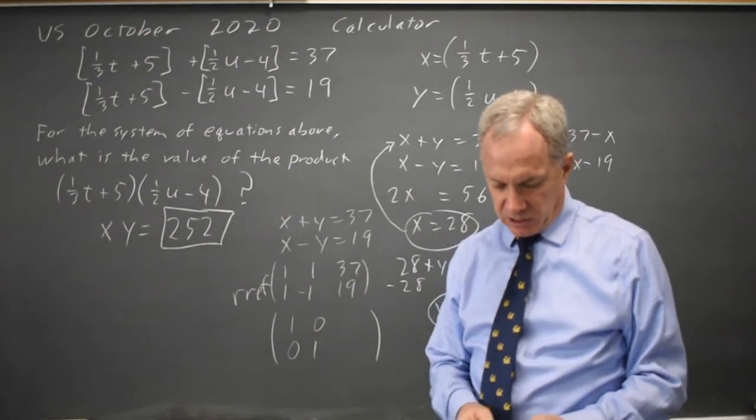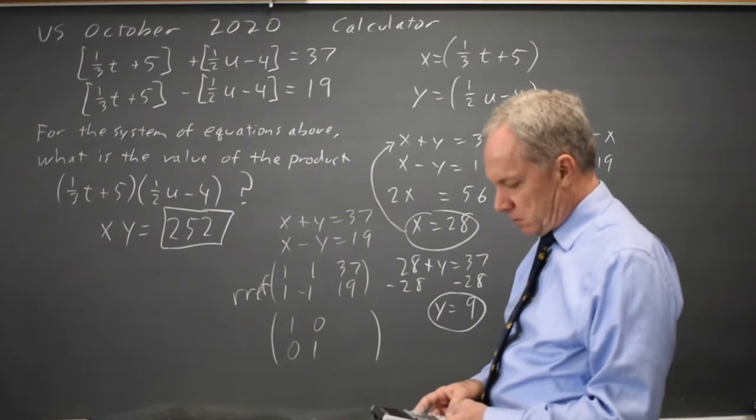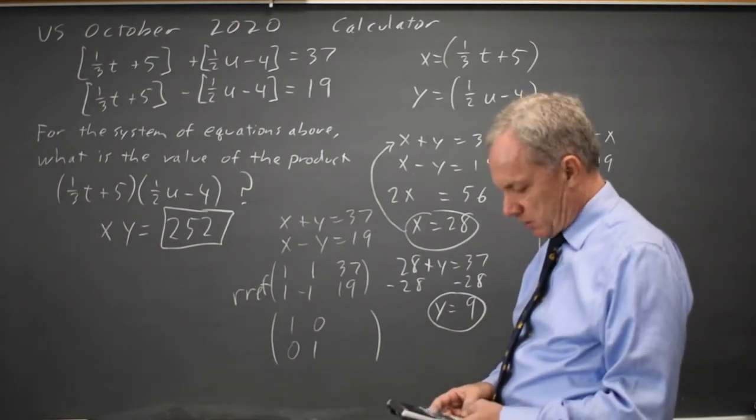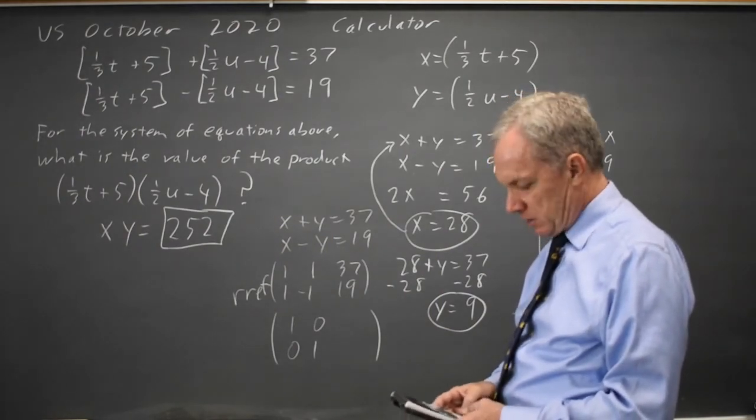and then reduced row echelon form shows me. Matrix edit. It's a 2 by 3. 1, 1, 37, and 1, negative 1, 19.